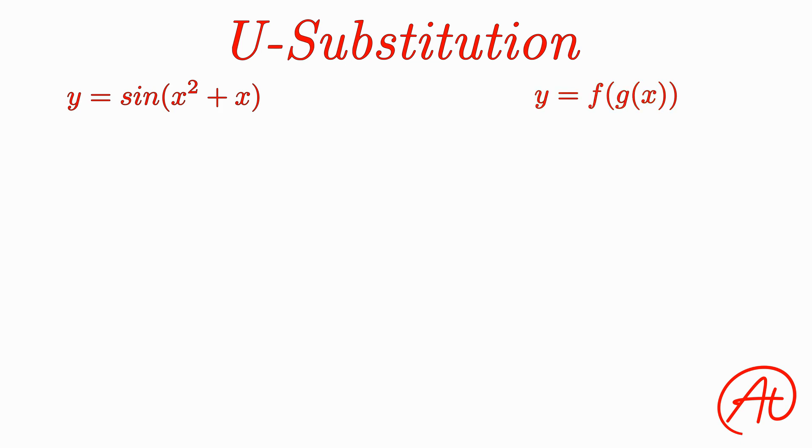You know that when you have a function in this form, the derivative becomes the derivative of the outside function, leaving the inside alone, multiplied by the derivative of the inside function. So for this example, the answer becomes the derivative of the outside, which is cosine of x squared plus x, times the derivative of the inside, which is 2x plus 1.